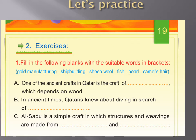Fill in the following blanks with the suitable words in brackets. They've given you a word bank: gold manufacturing, shipbuilding, sheep wool, fish, pearl, camel's hair. So, number one: one of the ancient crafts in Qatar is the craft of blank, which depends on wood. What do they make with wood? Very good — shipbuilding! Excellent.